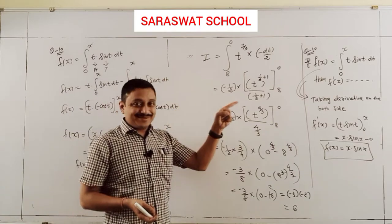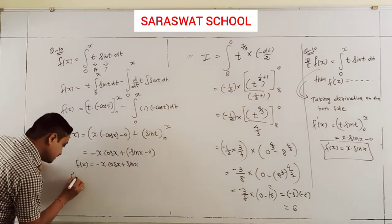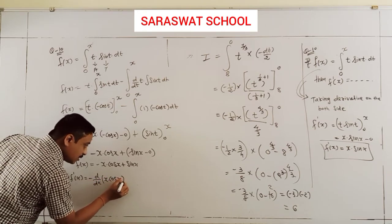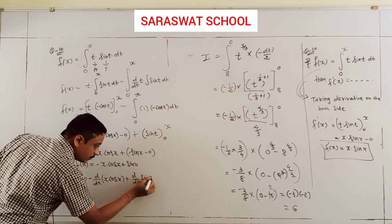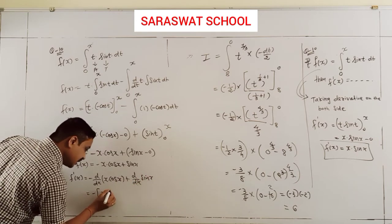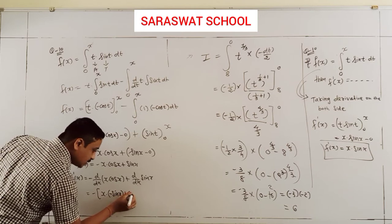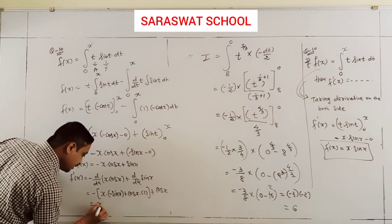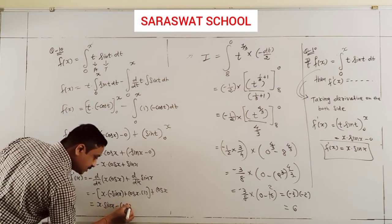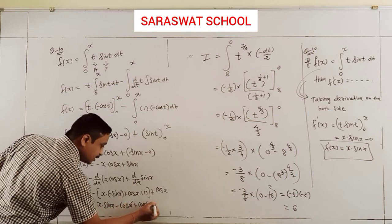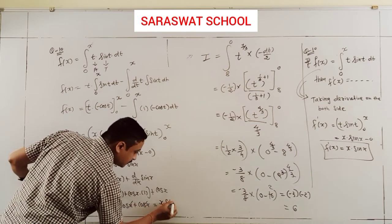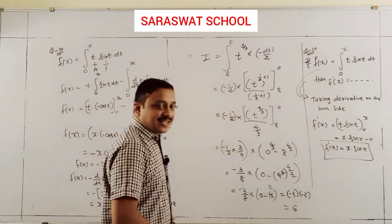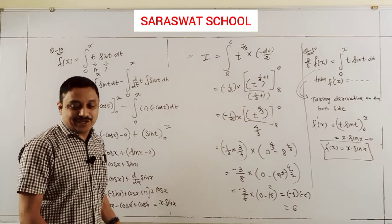Now taking F'(x): derivative of (-x·cosx + sinx). Using product rule on -x·cosx: -cosx - x(-sinx) = -cosx + x·sinx. Plus derivative of sinx = cosx. So F'(x) = -cosx + x·sinx + cosx = x·sinx. Check — same answer coming by both methods.